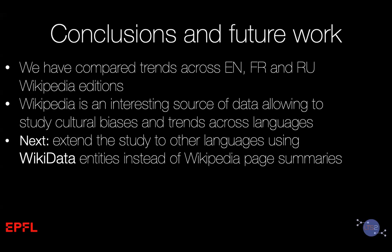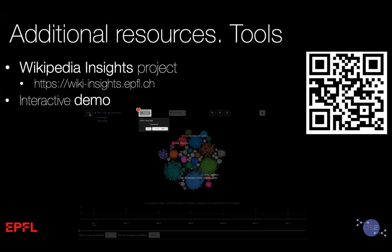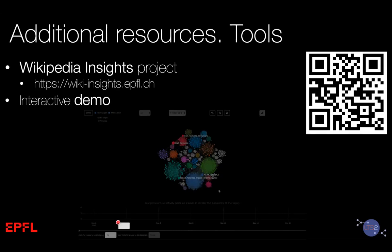To conclude, Wikipedia can tell us more than is written on its pages — it's an interesting source of data that allows us to study cultural biases. In future work, we'd like to extend our study to more languages. As suggested by a reviewer, we tested Wikidata as an additional source of information and it simplifies the topic detection pipeline, making it easy to extend to more languages. Visit the project website to find the latest research, datasets, and the interactive demo.